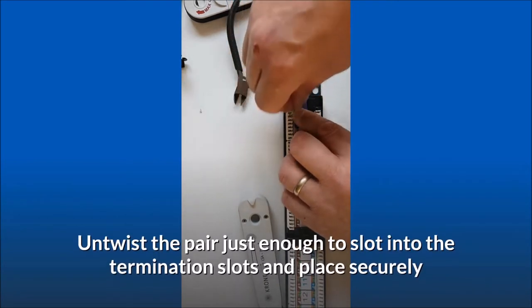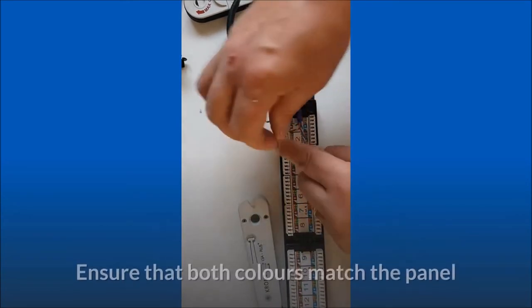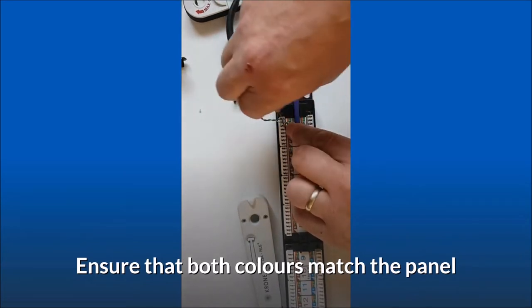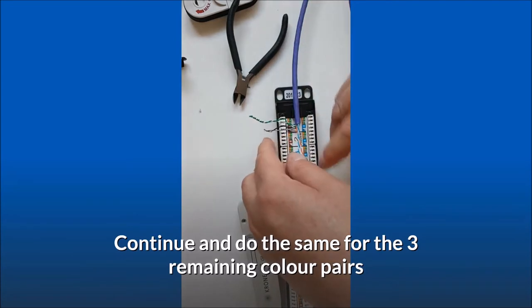Untwist the pair just enough to slot into the termination slots and place securely. Ensure that both colors match the panel. Continue and do the same for the three remaining color pairs.